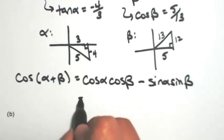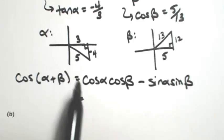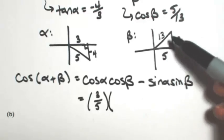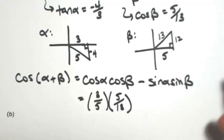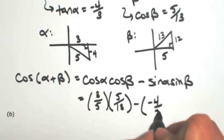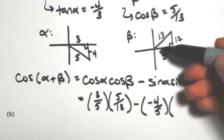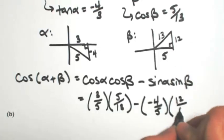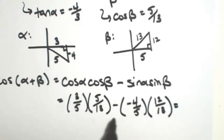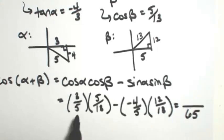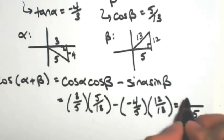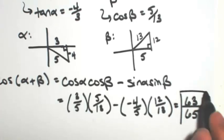From our pictures we can find everything. Cosine of alpha is 3 fifths, cosine of beta is 5 thirteenths, sine of alpha is negative 4 fifths, and sine of beta is 12 thirteenths. The common denominator is 5 times 13, which is 65. The two negatives make a plus, so we get 15 plus 48, which equals 63. So the answer is 63 over 65.